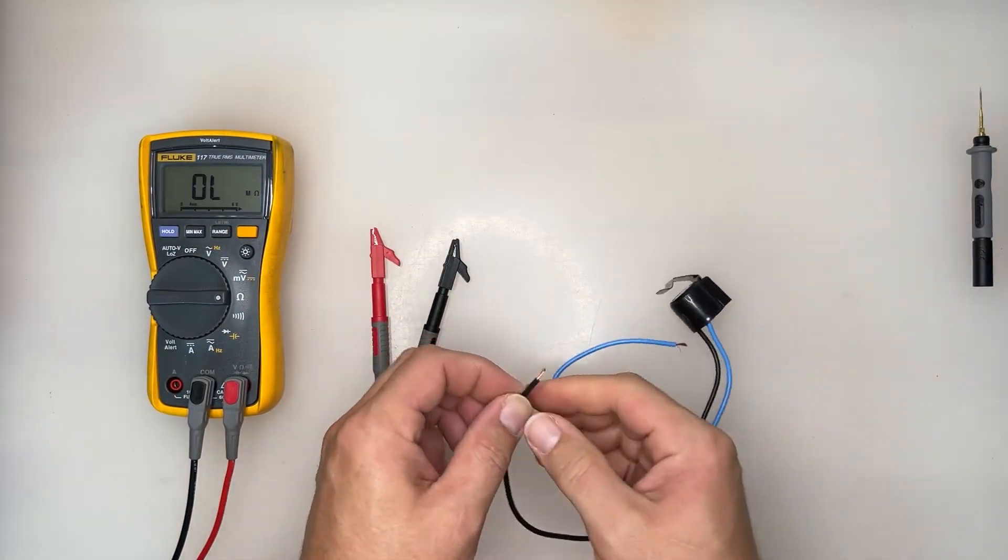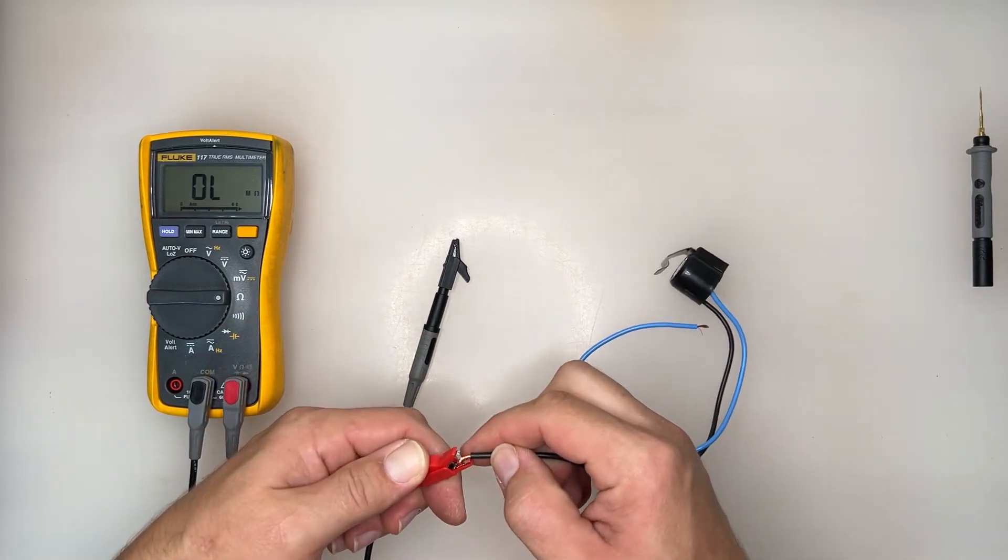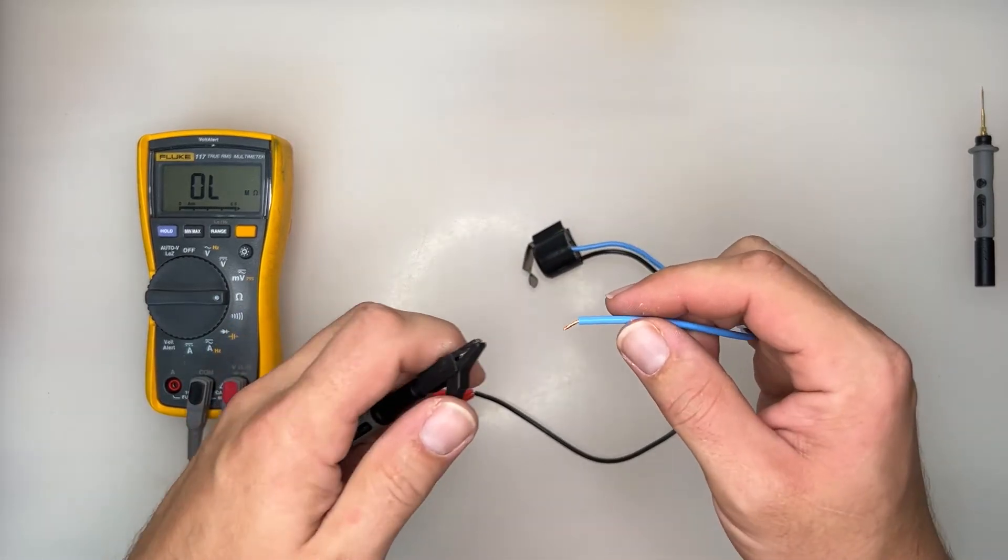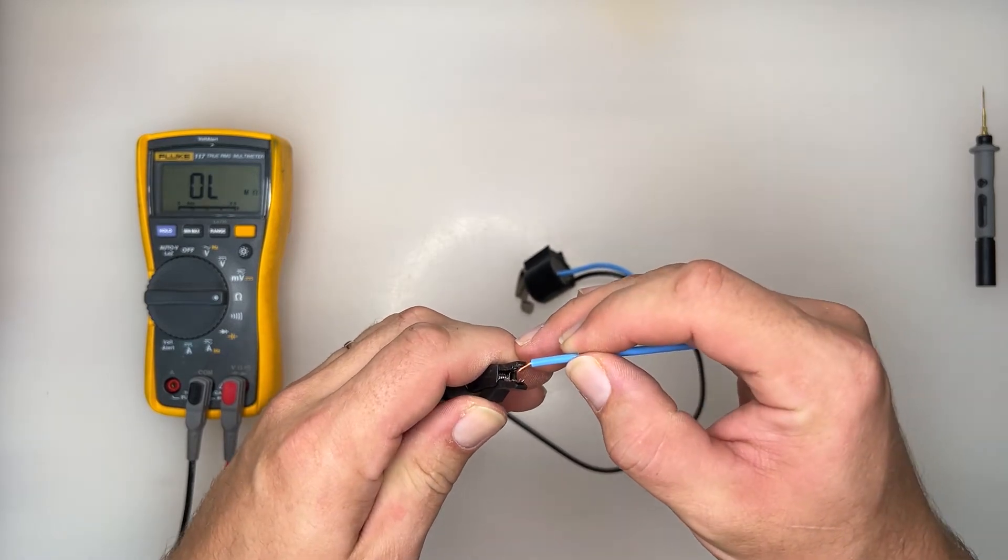Note why our color code does not play a role when testing this thermostat. Thermostat black wire to red test lead. Thermostat blue wire to black test lead.